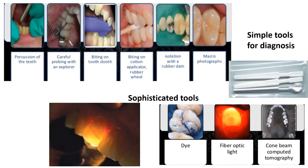Diagnosis of crack tooth syndrome can be done with simple or sophisticated tools. Simple tools include: percussion of the tooth — mild pain on percussion; careful probing with an explorer; and biting on the tooth sloth — a small pyramidal-shaped plastic bite block with a concavity at the apex, which directs occlusal forces to one cusp at a time.